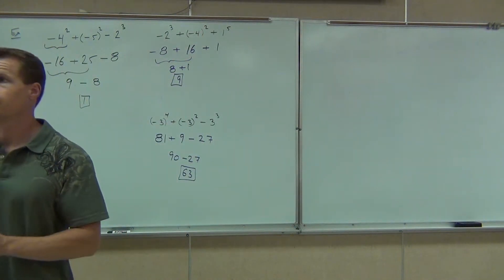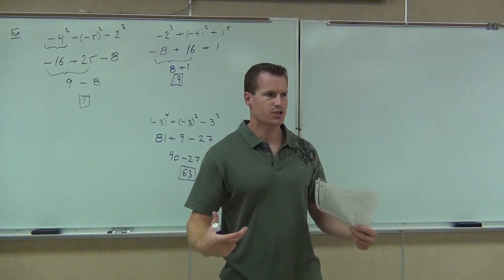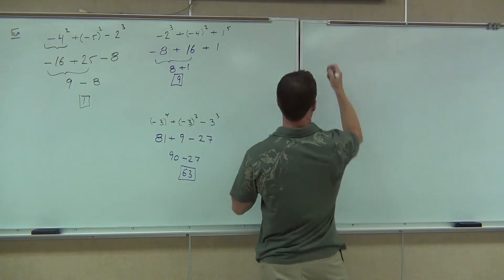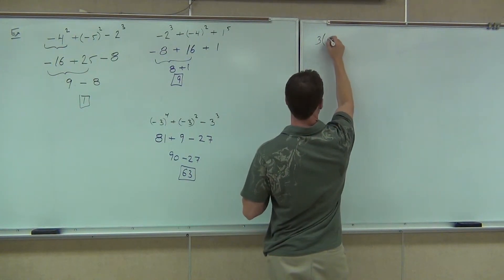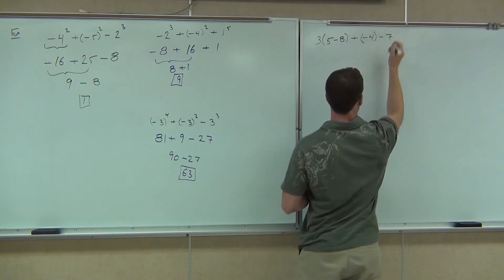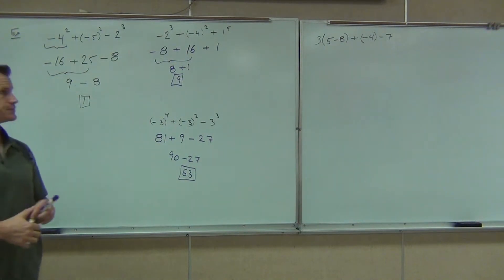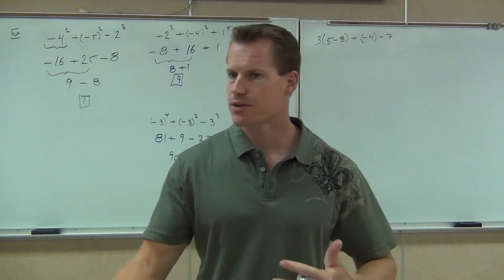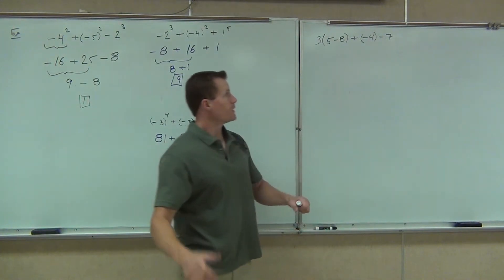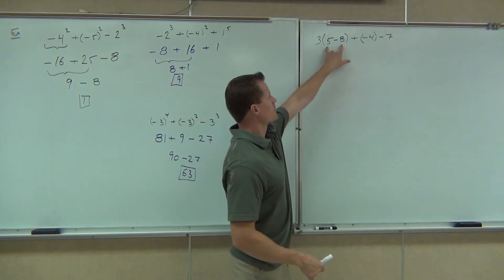Any other questions before we go on? All right. Let's start building these problems up a little by little. Remember, they're not going to get any harder — they'll just get a little bit longer, just a little bit more steps. So on this one, we're going to do our PEMDAS, our order of operations. Can you see the first thing that we're going to do? PEMDAS — good. So we're ignoring the rest of what we're looking at right here. We're doing the 5 minus 8.